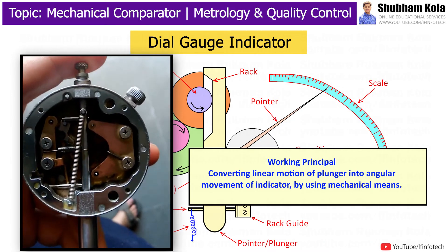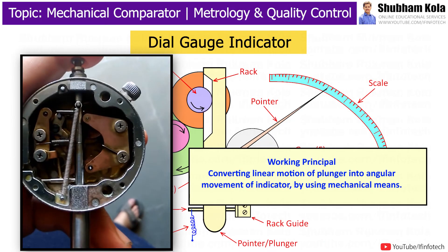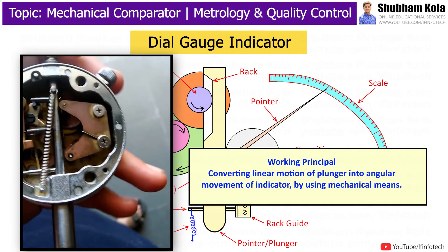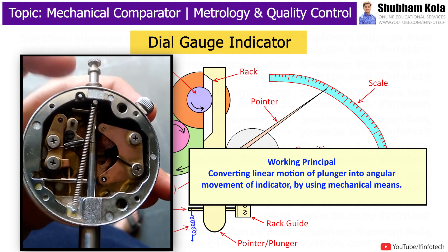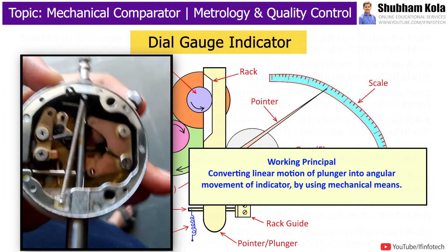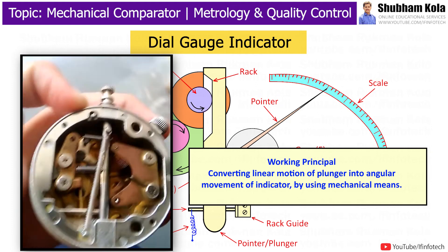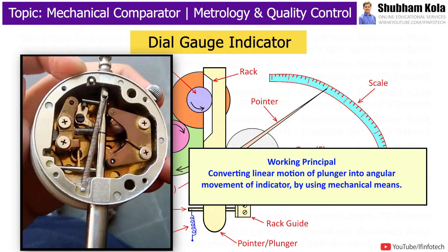The Dial-cage Indicator works on the principle of converting linear motion of the plunger into angular motion of the indicator by using mechanical means.